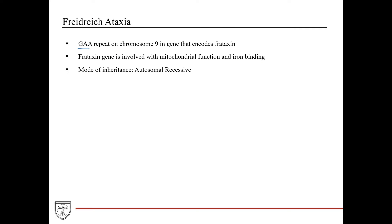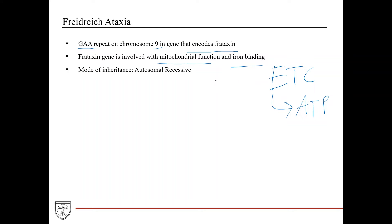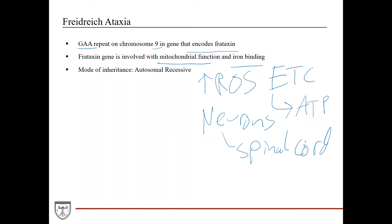Friedreich's ataxia is a GAA repeat on chromosome nine in the gene that encodes frataxin. The frataxin gene is involved in mitochondrial function and iron binding, mainly iron transport within the electron transport chain in the mitochondria, which is important for ATP production. These patients have iron overload in the mitochondria, resulting in increased reactive oxygen species, which cause significant cellular damage and affect the electron transport chain's ability to produce ATP. The main effects are felt in neurons, specifically in the spinal cord. The mode of inheritance is autosomal recessive.